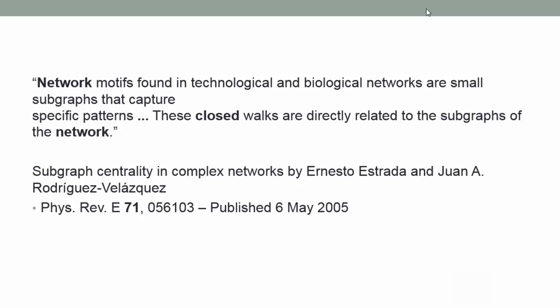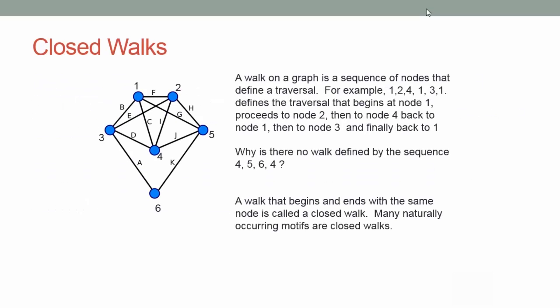Now our next topic is closed walks. You might ask why we're changing from network motifs, which we can think of as a small subgraph, to closed walks. Well, in biological networks, these motifs are often closely related to the closed walks in the network. A quote from a paper by Ernesto Estrada and Juan Rodriguez Velasquez notes that in technological and biological networks, small subgraphs that capture specific patterns — the network motifs — are directly related to the subgraphs of the network.